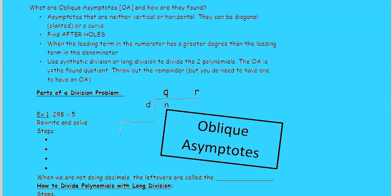These are asymptotes that are neither vertical nor horizontal. They could be diagonal, slanted, or curved.